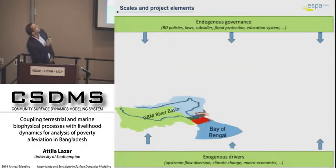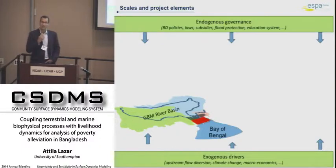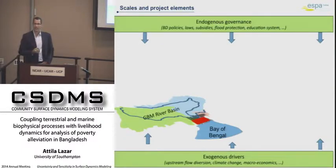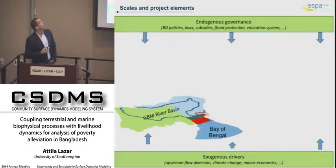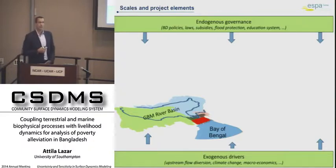I forgot to mention the endogenous governance, which is the national scale of the project. That's where the Bangladeshi decision makers can make a difference — what policies they create, how subsidies are formulated, what they support, what the flood protection initiatives are, and infrastructure development.